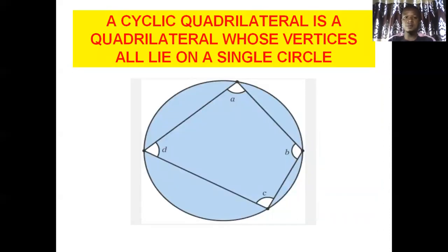Now take a look at this shape below. The number of sides of the polygon inside the circle is four. The vertices of this quadrilateral are touching the circumference of a circle. Remember, the circumference of a circle is the line that surrounds a circle — the distance around a circle. You find out that the vertices of this quadrilateral are touching the circumference of the circle. If such a thing happens, the two in combination is termed a cyclic quadrilateral. Therefore, a cyclic quadrilateral is a quadrilateral whose vertices all lie on a single circle.